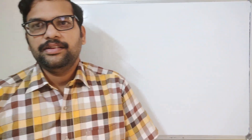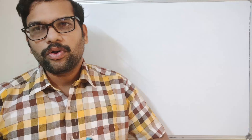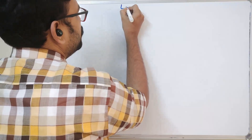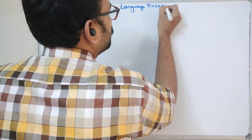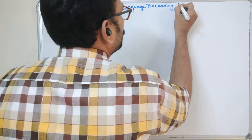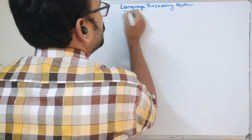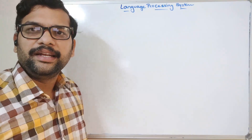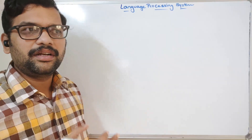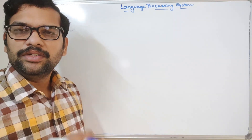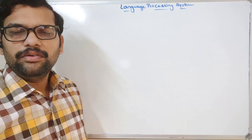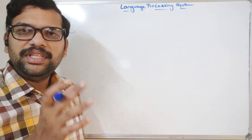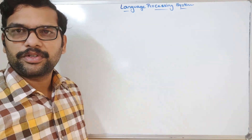Hello friends, welcome back to our channel. In this session, we will discuss one more topic in compiler design — the basic language processing system. In the previous session, we discussed the introduction to the compiler: what exactly the compiler does. The compiler takes a high level language as input and gives a low level language as output. How this process is done is called the language processing system.